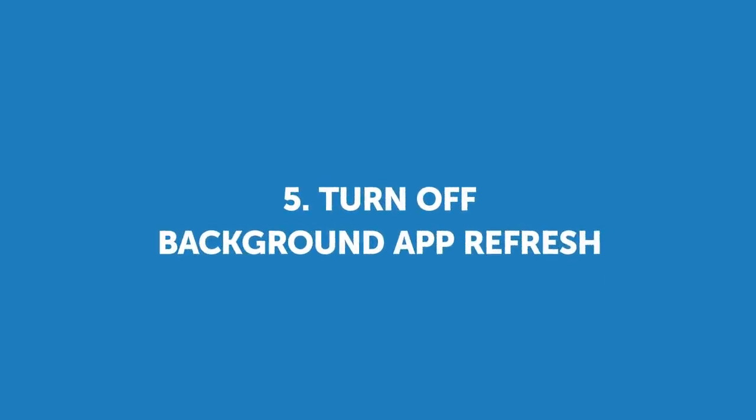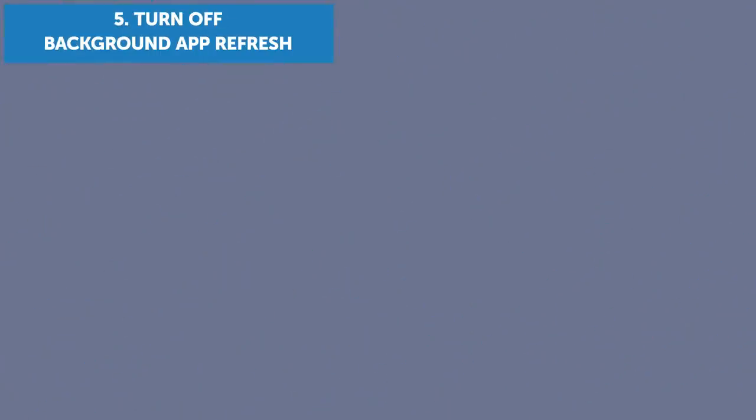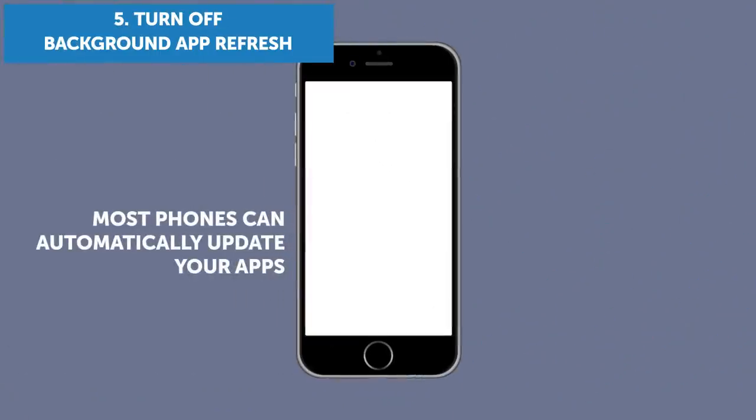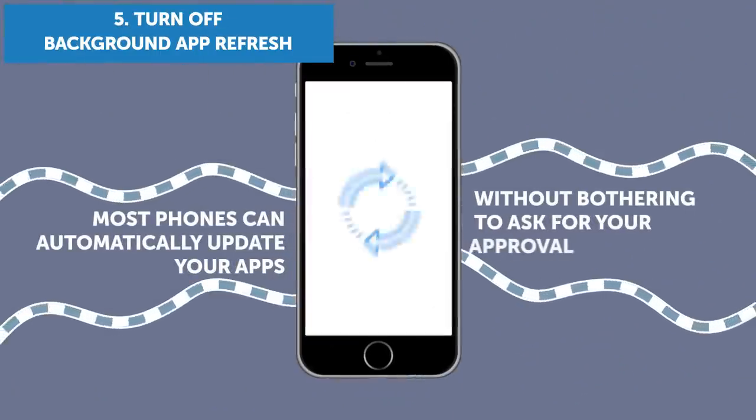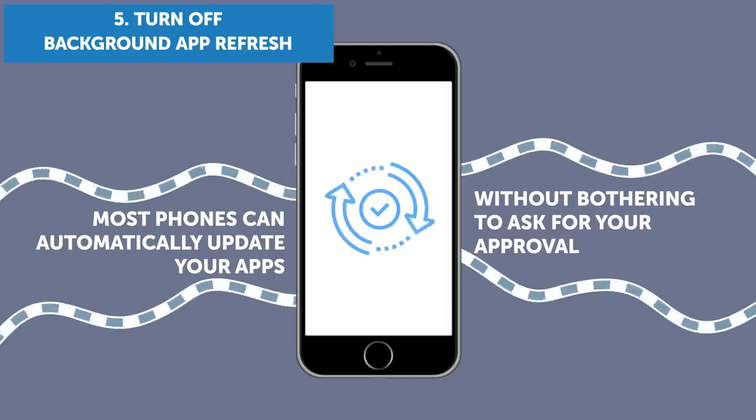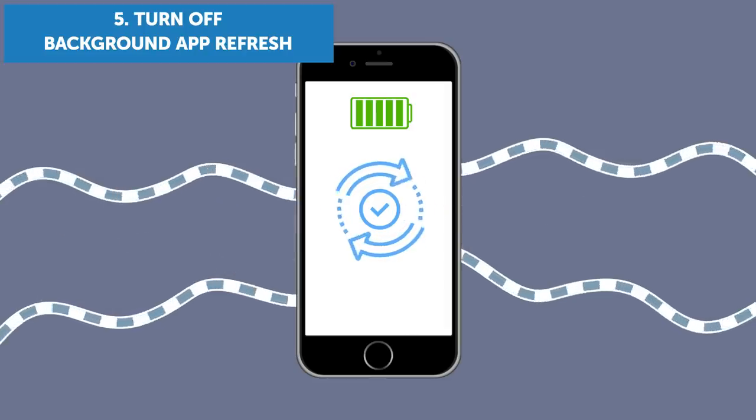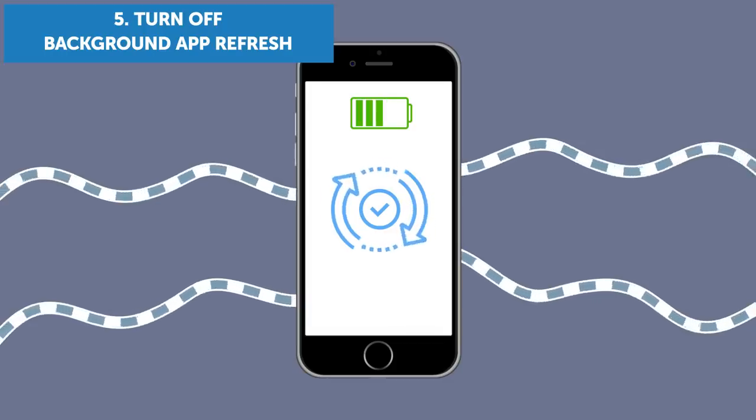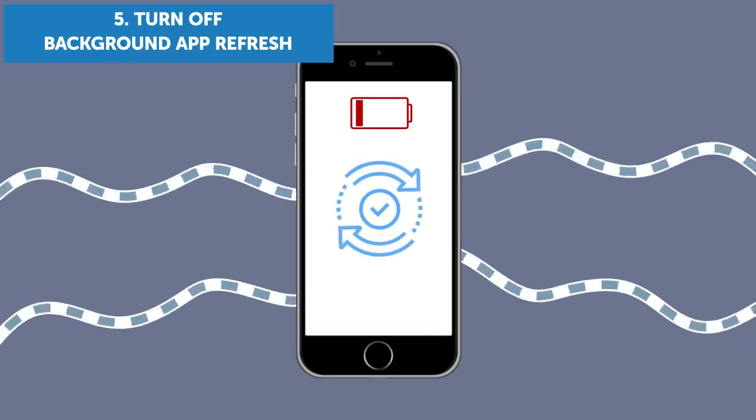5. Turn Off Background App Refresh. Nowadays, most phones can automatically update your apps without bothering to ask for your approval. But of course, this process consumes a lot of your phone's charge since the upgrades can be pretty big.